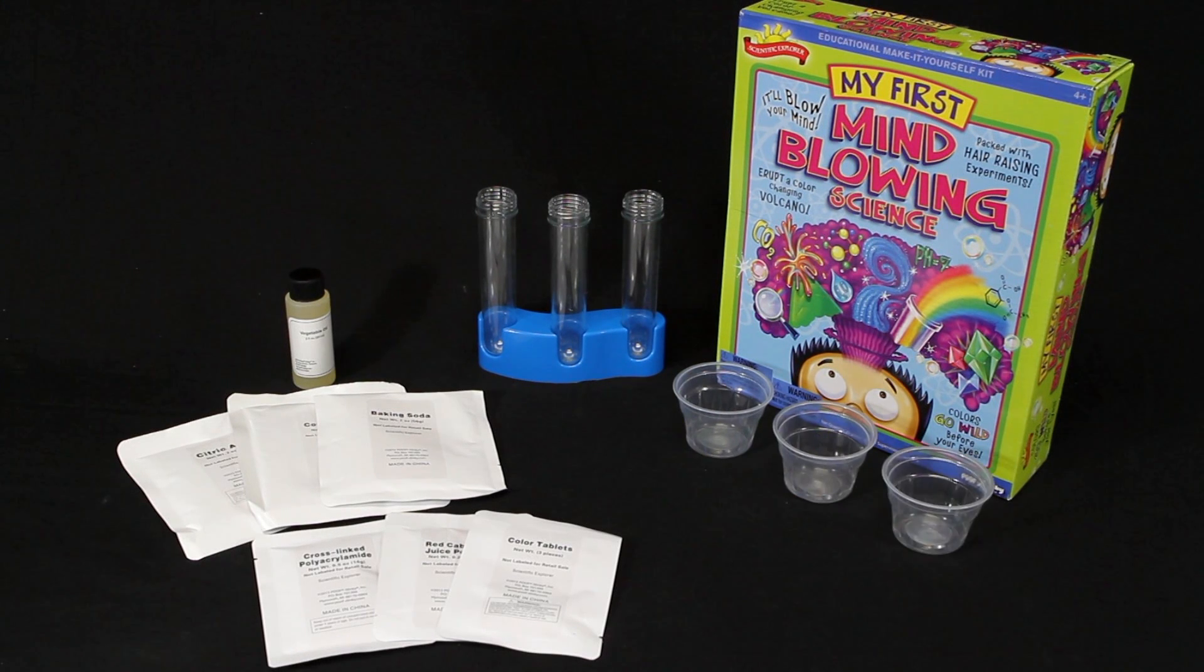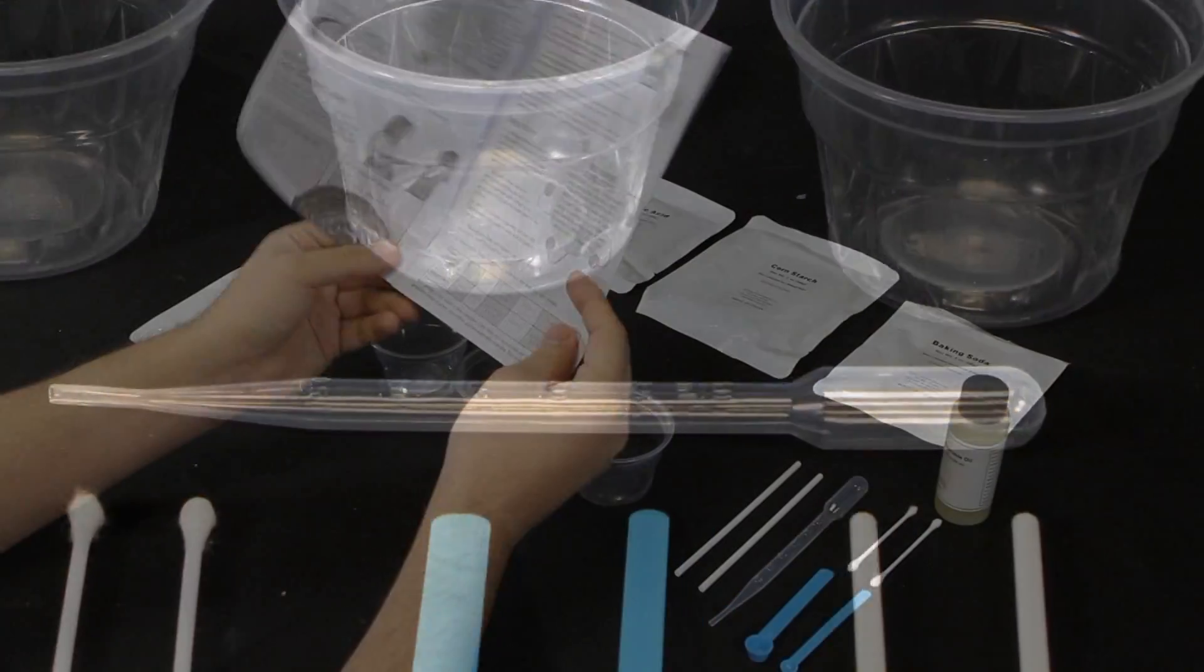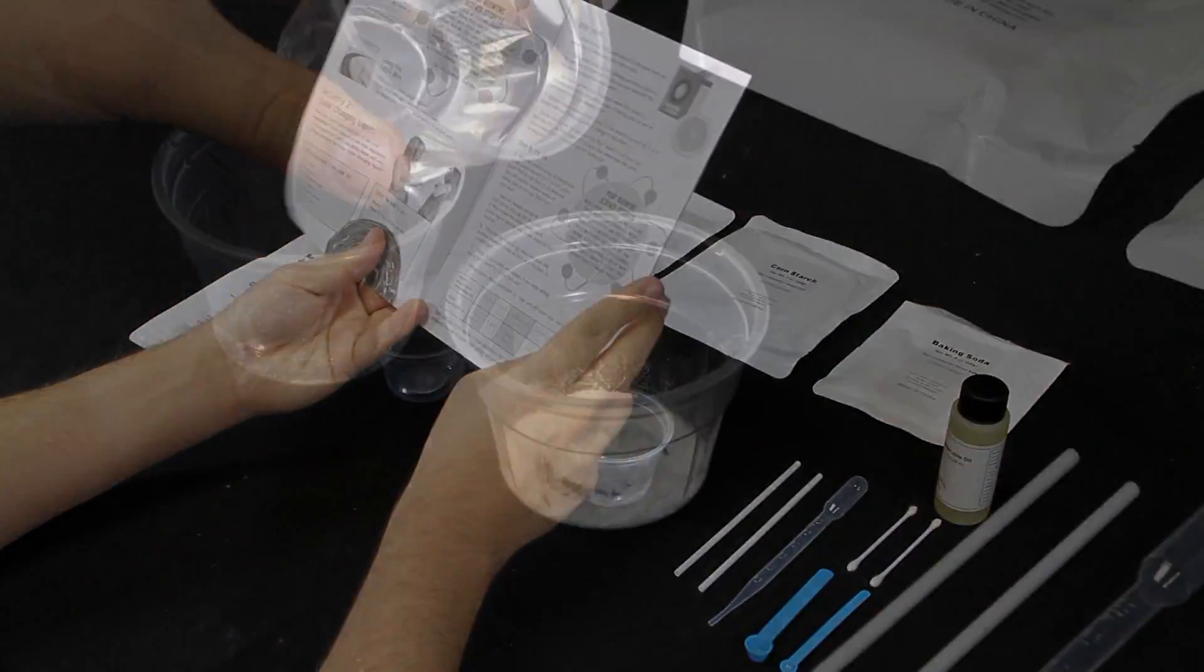The kit also includes 3 test tubes, 3 plastic cups, 2 cotton swabs, 2 measuring scoops, 2 sticks, a test tube stand, 1 pipette, and instructions for 11 different amazing science experiments.